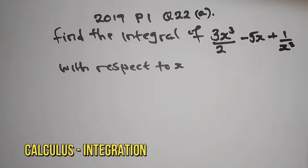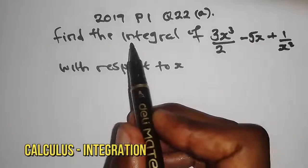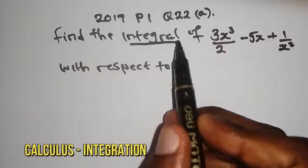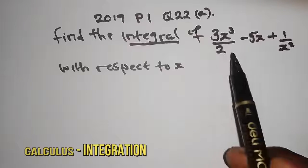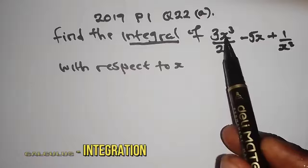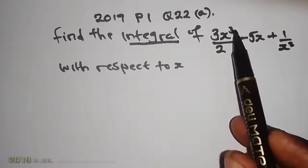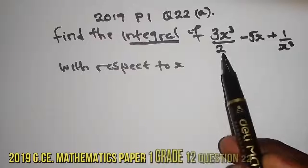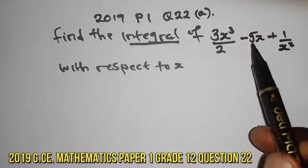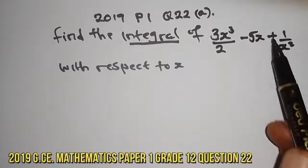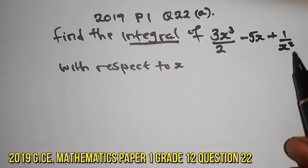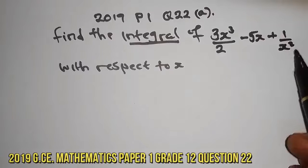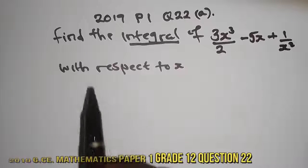We are looking at integration. The question says: find the integral of 3x³ divided by 2, minus 5x, plus 1 over x squared.